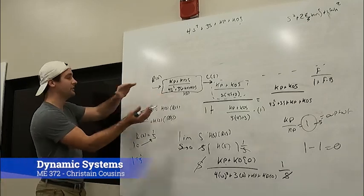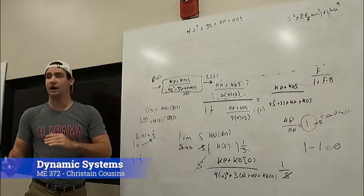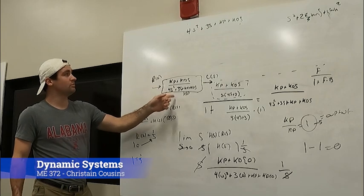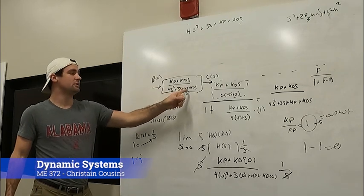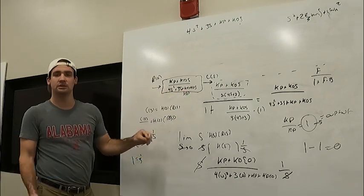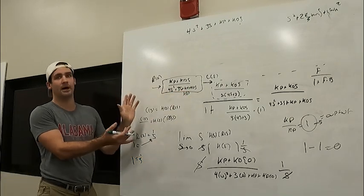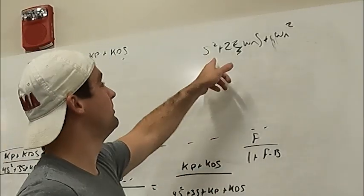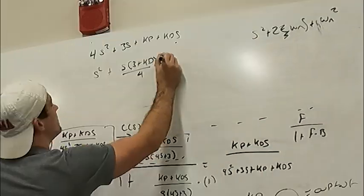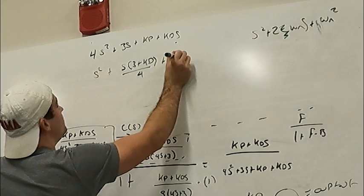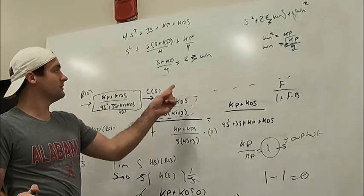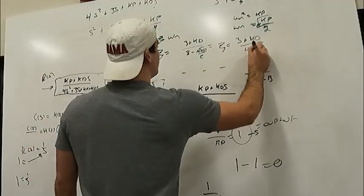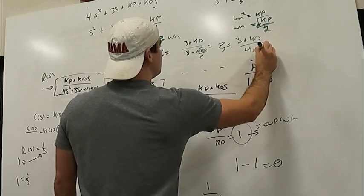The characteristic equation is the denominator of the transfer function, so: 4s² + 3s + Kp + Kd·s. This is also why we want to not do the derivative gain directly. So we compare these two equations — this is going to equal this for Kp.